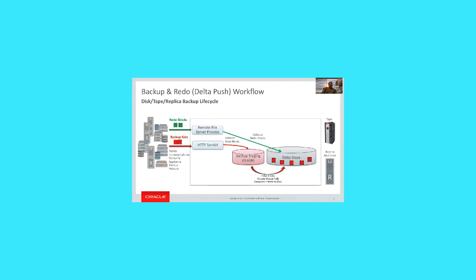Real-time redo also feeds into the system using asynchronous redo transport — the same technology as Data Guard. Any number of database clients can send their redo in real time. An RFS (Remote File Server) process receives the redo blocks, validates them, and writes them to the delta store as archive block backups upon every archive log switch on the protected database. These are cataloged and visible through the recovery catalog using standard RMAN list backup commands. This redo transport eliminates the need for scheduled archive log backup jobs across hundreds or thousands of databases, offloading significant work from production systems.